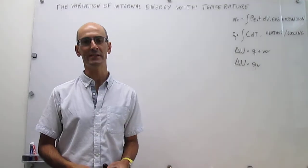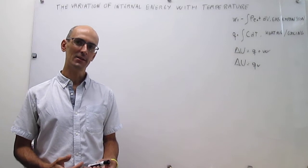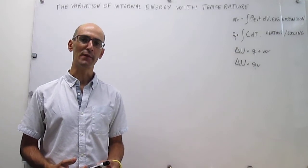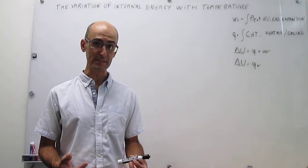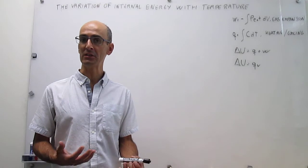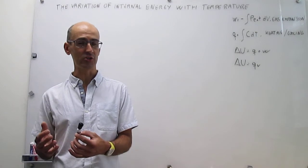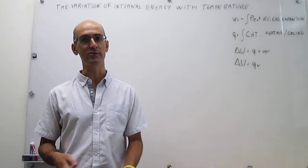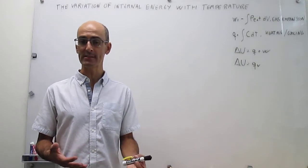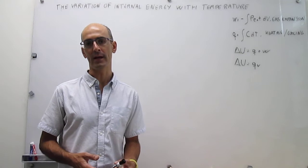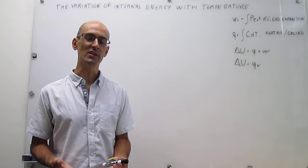In this video we learn how the internal energy changes with temperature. The internal energy is the thermodynamic variable that allows us to do the bookkeeping of energy. For example, if we want to know how much energy can be released in a chemical reaction, we could calculate the change in internal energy from reactants to products, and that change will be a very good measure for how much energy can be made available for that reaction. It is quite useful to understand how the internal energy changes with temperature.